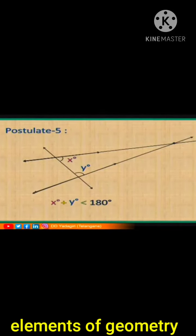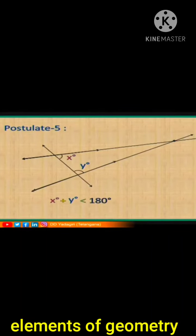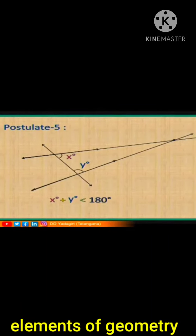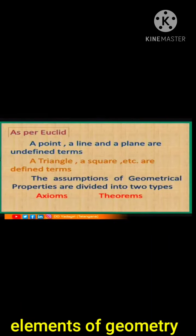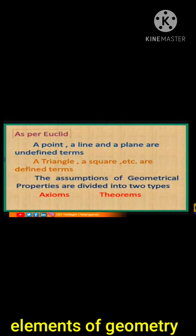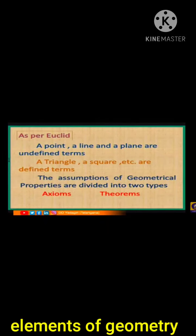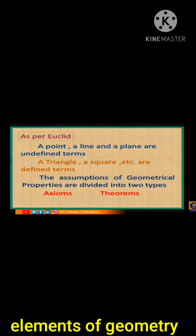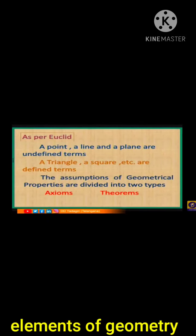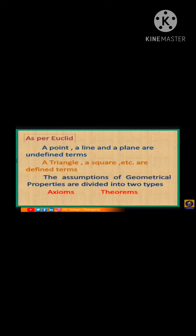To summarize: Postulate 1 — a unique line passes through two distinct points; Postulate 2 — extension of a line segment; Postulate 3 — circles based on center and radius; Postulate 4 — all right angles are equal; Postulate 5 — two lines are not parallel if the transversal makes same-side interior angles less than 180 degrees. Also note: a point, a line, and a plane are undefined terms, while a triangle, a square, etc. are defined terms.